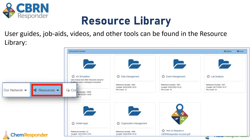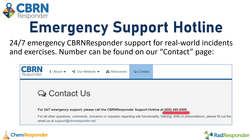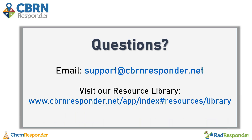Lastly, as a first-time user, it's important to know where to find additional information about the variety of capabilities and features. The Resource Library, which can be found from the top ribbon, is a great place to find that information — we have user guides, job aids, how-to videos, and other tools. As a user, it's also important to know that we have a 24-7 emergency support hotline for real-world incidents and exercises; the number can be found on our contact page. If you have any questions that are not part of an emergency, you can email us at support@cbrnresponder.net, and one of the program support staff members will respond to you during normal business hours. For more information on particular capabilities, you can visit the Resource Library from CBRNResponder, RADResponder, or ChemResponder.